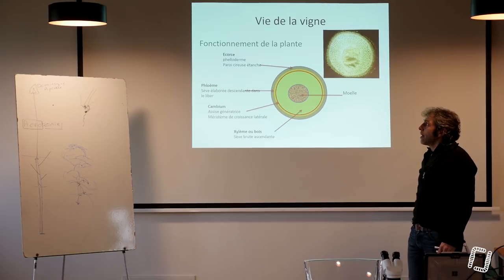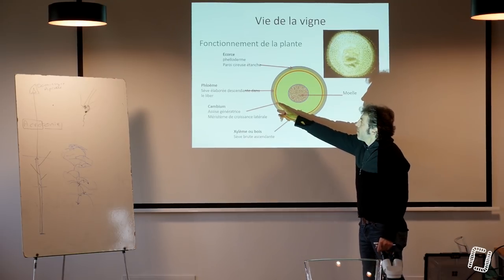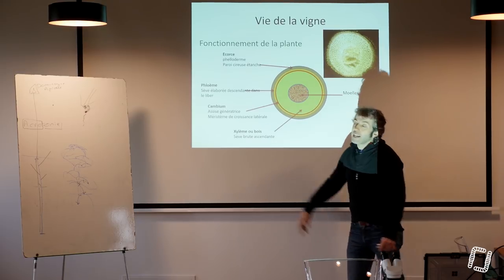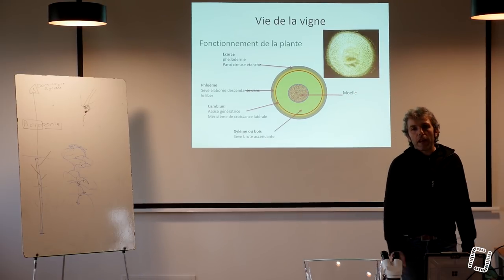Cette partie jaune est fabriquée, elle, par le cambium. Le cambium, lui, c'est la partie vivante en fait. S'il y a quelque chose qu'on pourrait caractériser de vivant dans la plante, c'est le cambium.